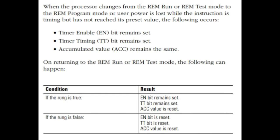When the processor changes from the run or test mode to the program mode, or user power is lost while the instruction is timing but has not reached its preset value, the following occurs: Timer enable EN bit remains set. Timer timing TT bit remains set. Accumulated value ACC remains the same.